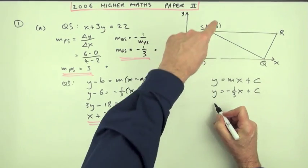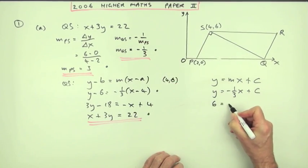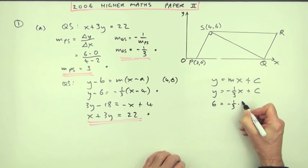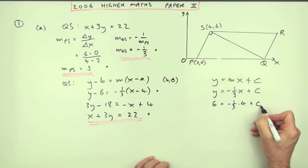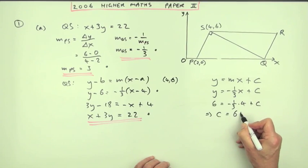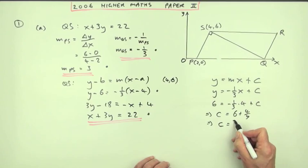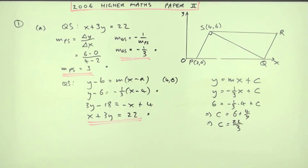Then you'd put in the points. You'd say, well, when y is 6, x is 4, which means that c is 6 plus that, 6 plus 4 upon 3, which means that c equals 22 upon 3. So there's a reason for that. That gets you a mark.